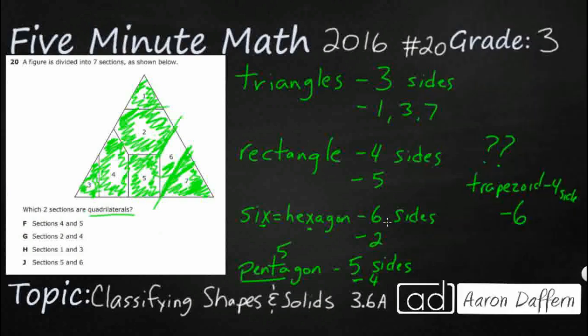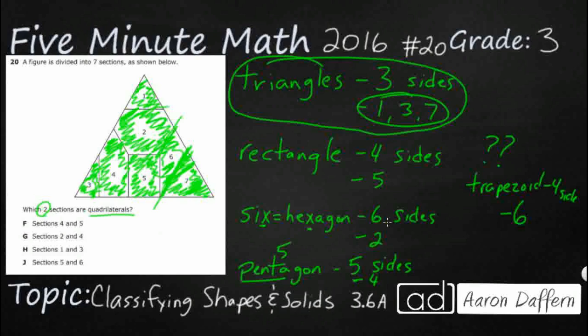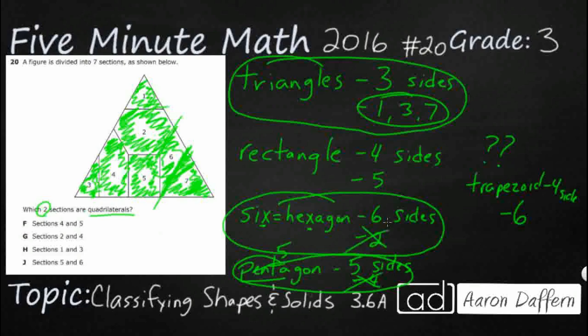Now you might be thinking, how does that help? We haven't figured out what quadrilaterals are. Remember it says there are two sections. It can't be this—we know this is triangles, but that's got three of the same. Pentagon's got five sides but it's only got one section, so that can't be it. Hexagon has got six sides but it's only got one section, that can't be it.